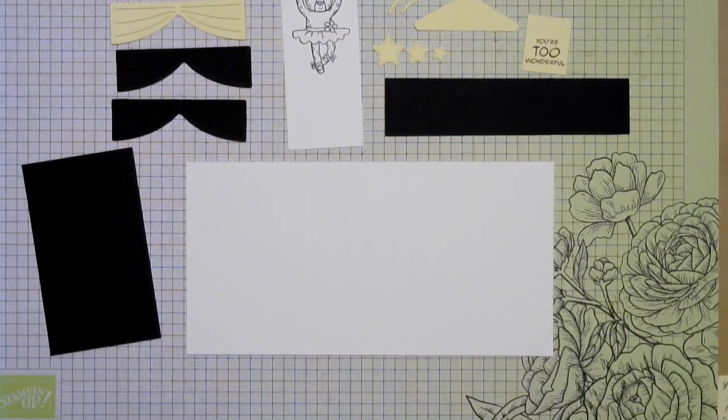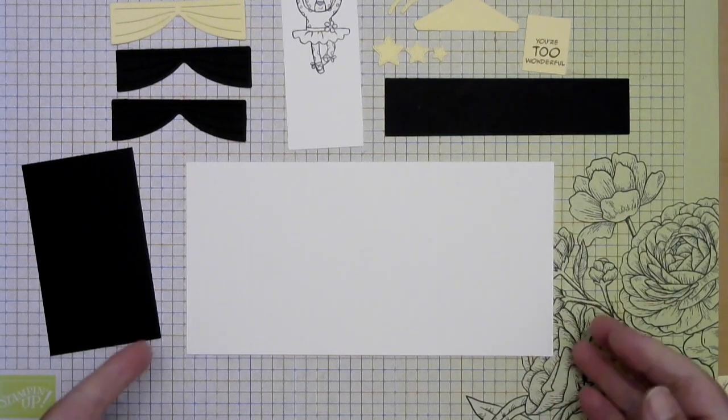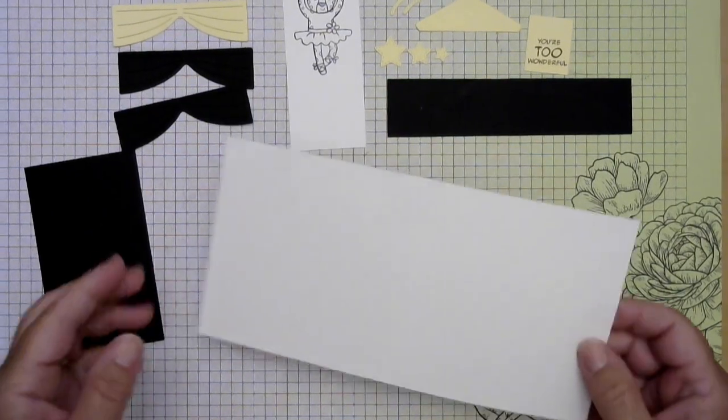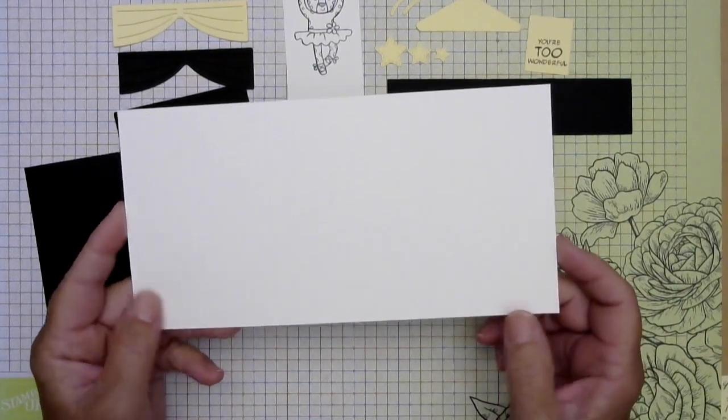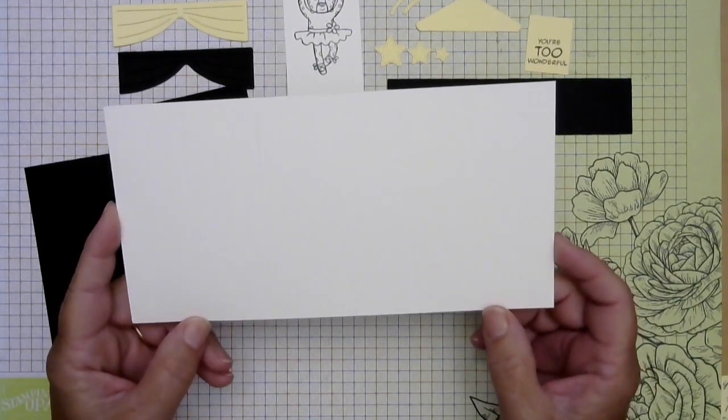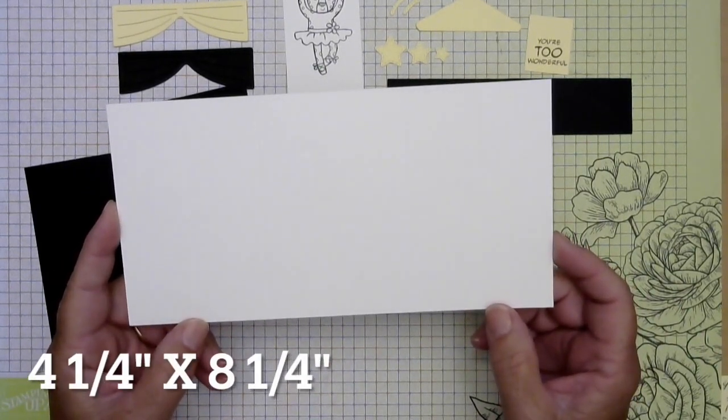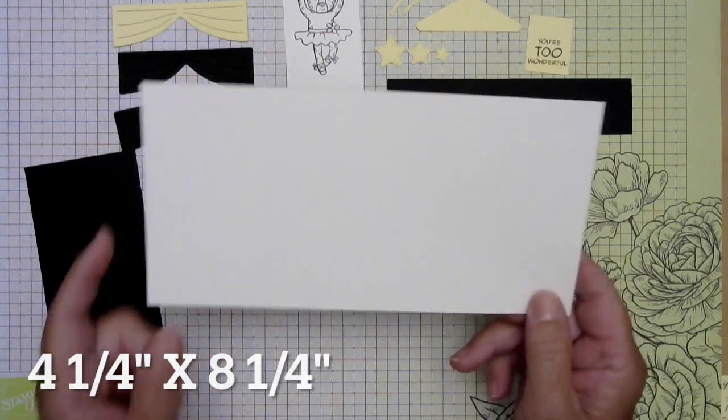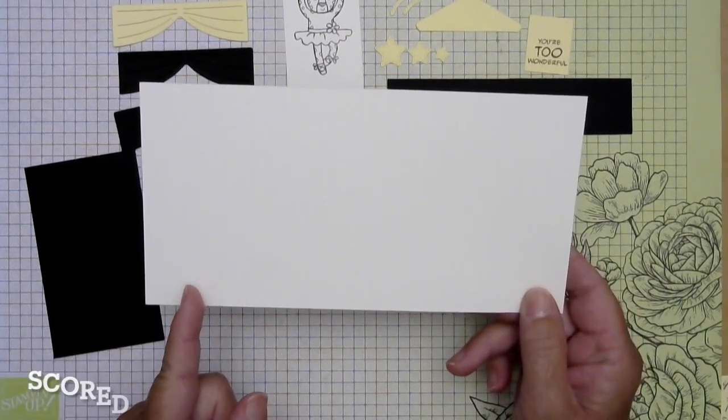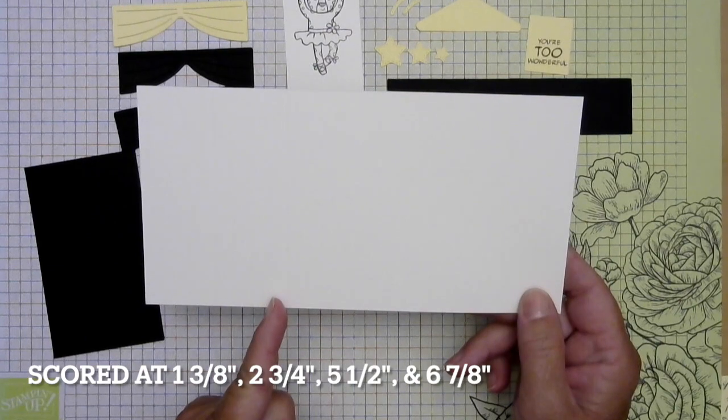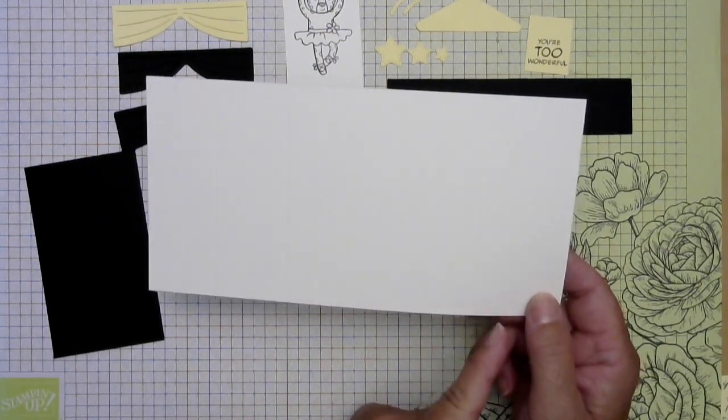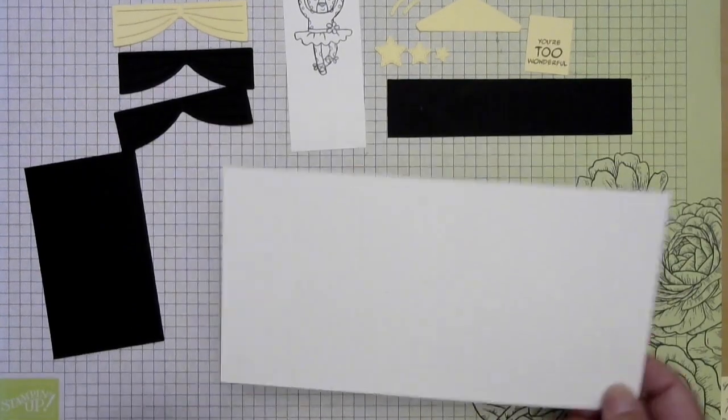So here are all the pieces that we need to make our fun curtain call bridge card. I'm going to start with the base which is just a piece of basic white thick paper. It's four and a quarter by eight and a quarter and then it's scored at one and three eighths, two and three fourths, five and a half and six and seven eighths.